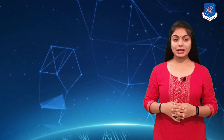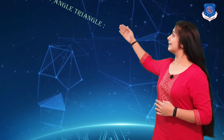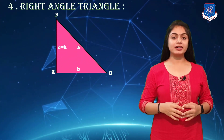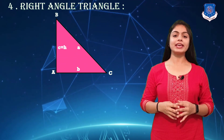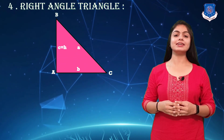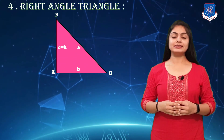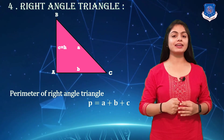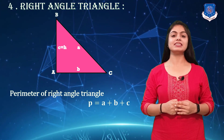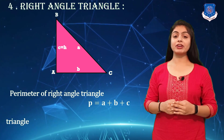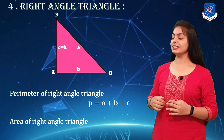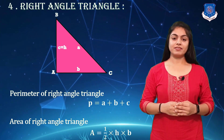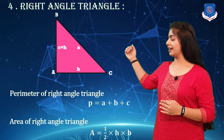Our fourth plane figure is the right-angle triangle. You can see the figure. Sides are denoted by small a, b, and c. The perimeter of a right-angle triangle is a + b + c, and the area of a right-angle triangle is (1/2) × b × h, where h denotes the height.